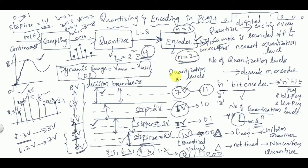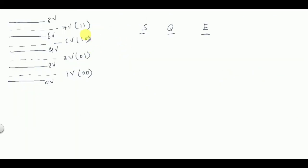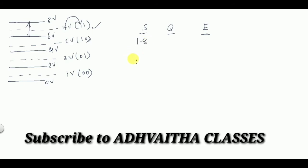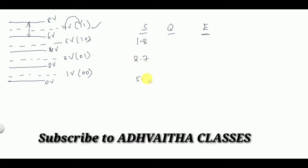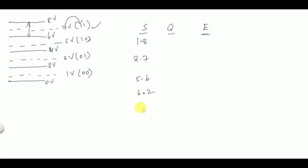This is the process of quantization and encoding. The new terms to remember are: decision boundaries, quantization levels, dynamic range, and number of quantization levels. Now let's look at another example: if any value between 6 and 8 volts is quantized to 7 volts, the encoder will encode it to the digital value 11. Let's take sampled values of 1.8, 2.7, 5.6, 6.2, and 8 volts.